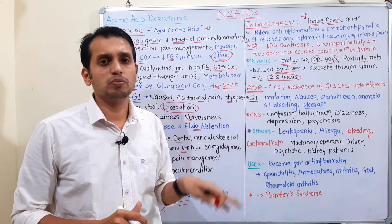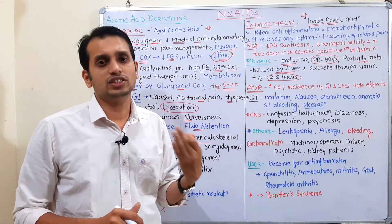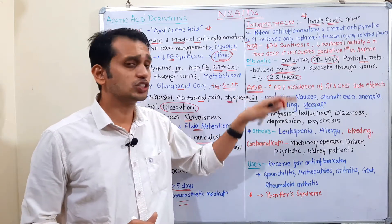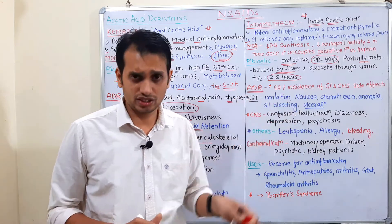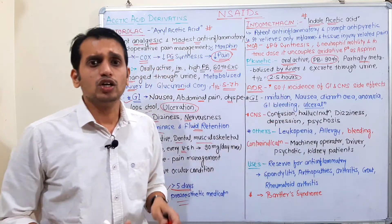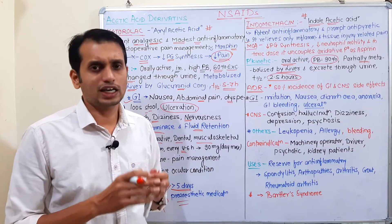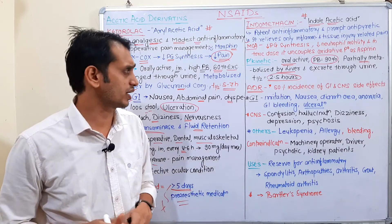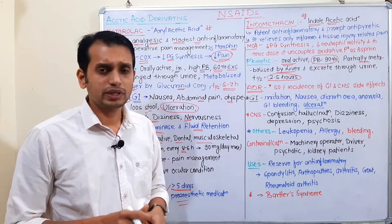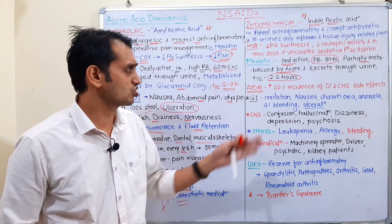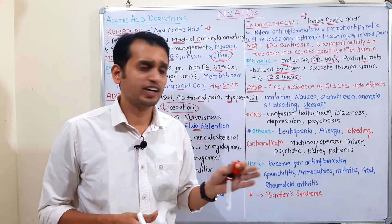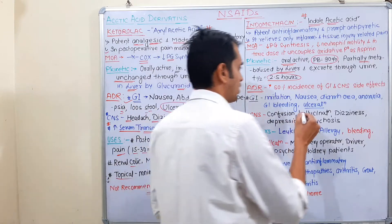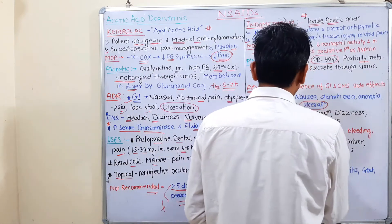The side effects of indomethacin are notable — there is a 50% incidence of GI and CNS side effects. GI effects include GI irritation, nausea, diarrhea, anorexia, GI bleeding, and ulceration.